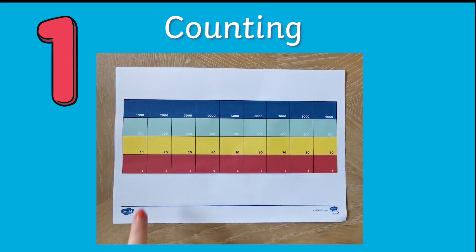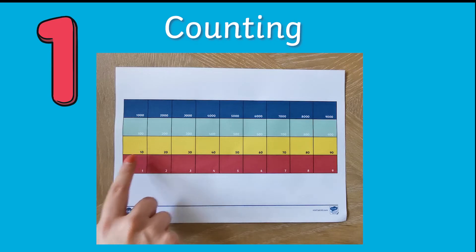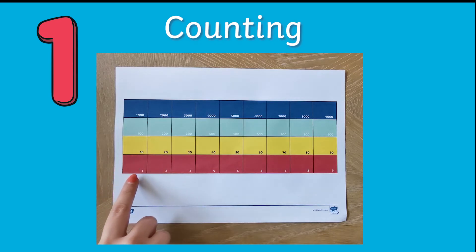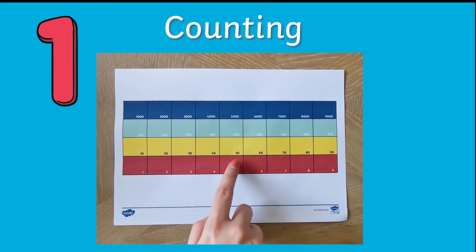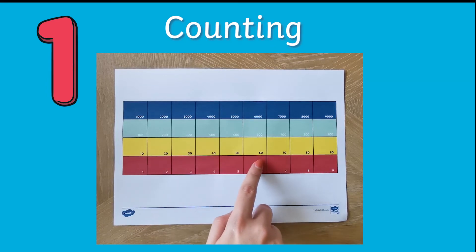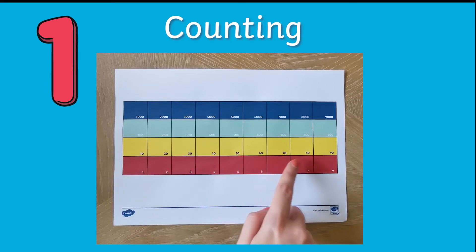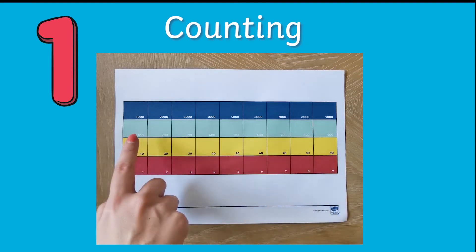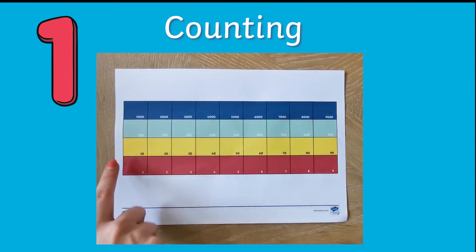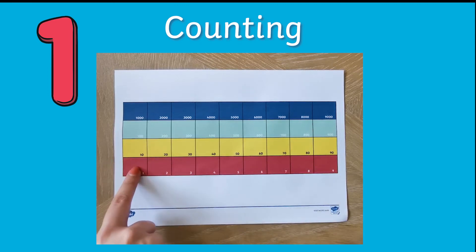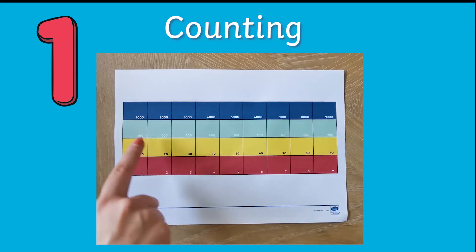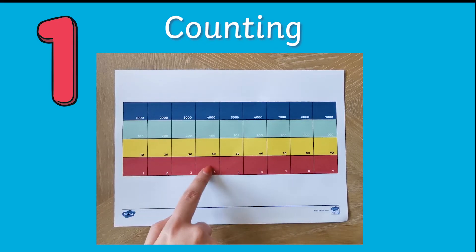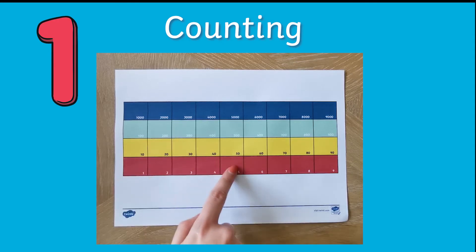You can even try combining tens and ones by saying one, two, three, four, five, six, seven, eight, nine, ten, eleven, twelve, thirteen, fourteen, fifteen.